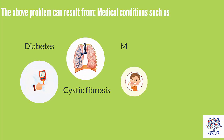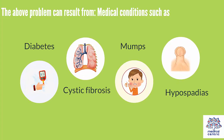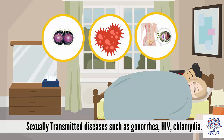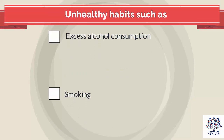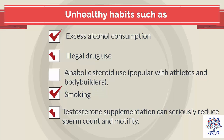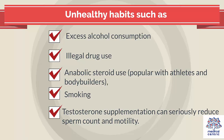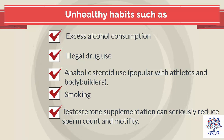These problems can result from medical conditions such as diabetes, cystic fibrosis, mumps, and hypospadias; sexually transmitted diseases such as gonorrhea, HIV, and chlamydia; and unhealthy habits such as excess alcohol consumption, illegal drug use, and anabolic steroid use, which is popular with athletes and bodybuilders. Smoking and testosterone supplementation can also seriously reduce sperm count and motility.